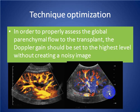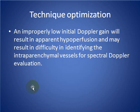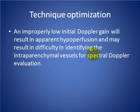Here we see the Doppler flow and perfusion of the transplanted kidney. An inappropriately low initial Doppler gain will result in apparent hypoperfusion and may result in difficulty identifying the intraparenchymal vessels.